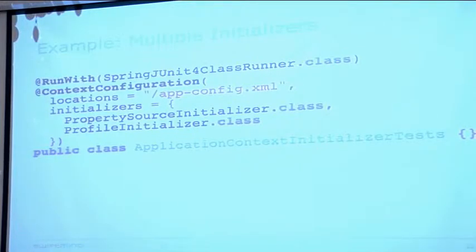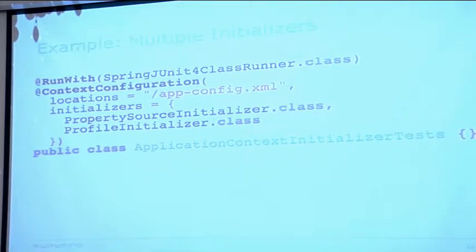Here's an example using JUnit with @RunWith specifying the Spring runner. With @ContextConfiguration, we specify an explicit location and an array of class references to initializers we want to test with. Maybe we're using these initializers in our web application context in production and want to ensure that the application context loaded for our tests is initialized the same way — or we have some special test initialization we want to do with the application context.